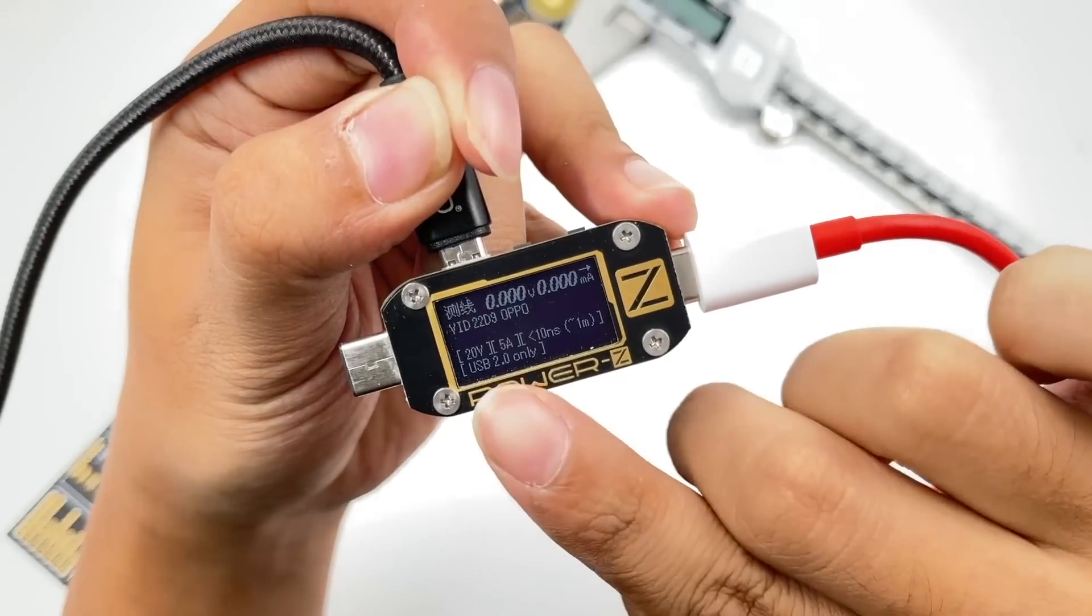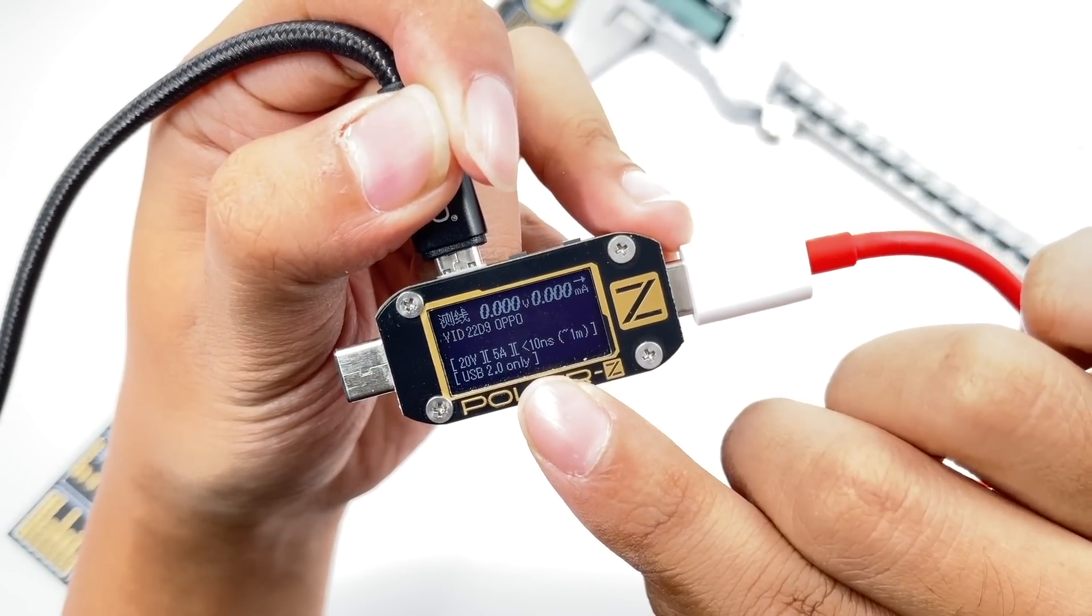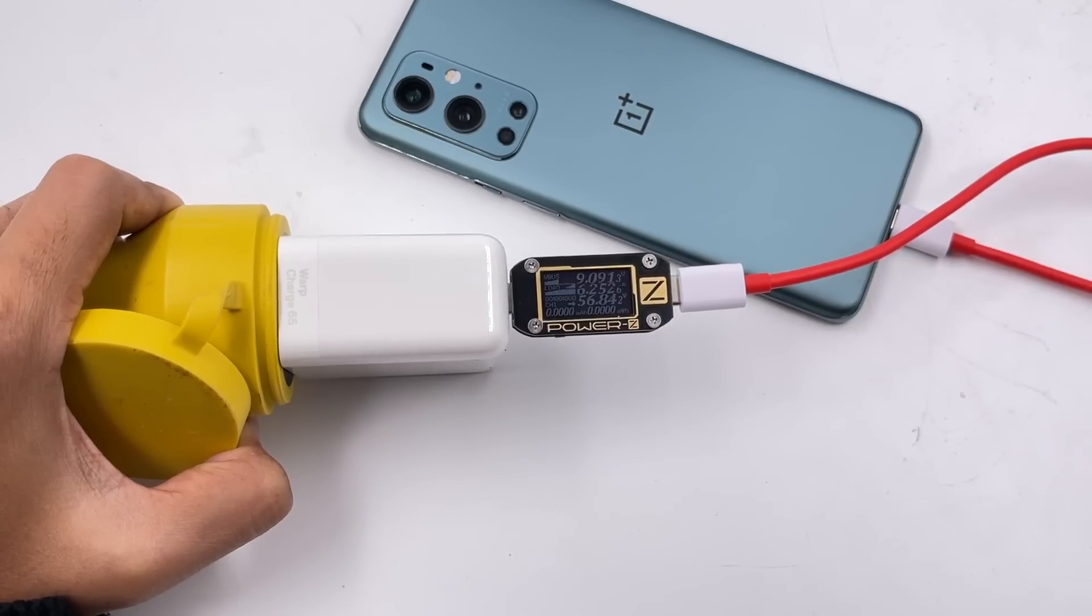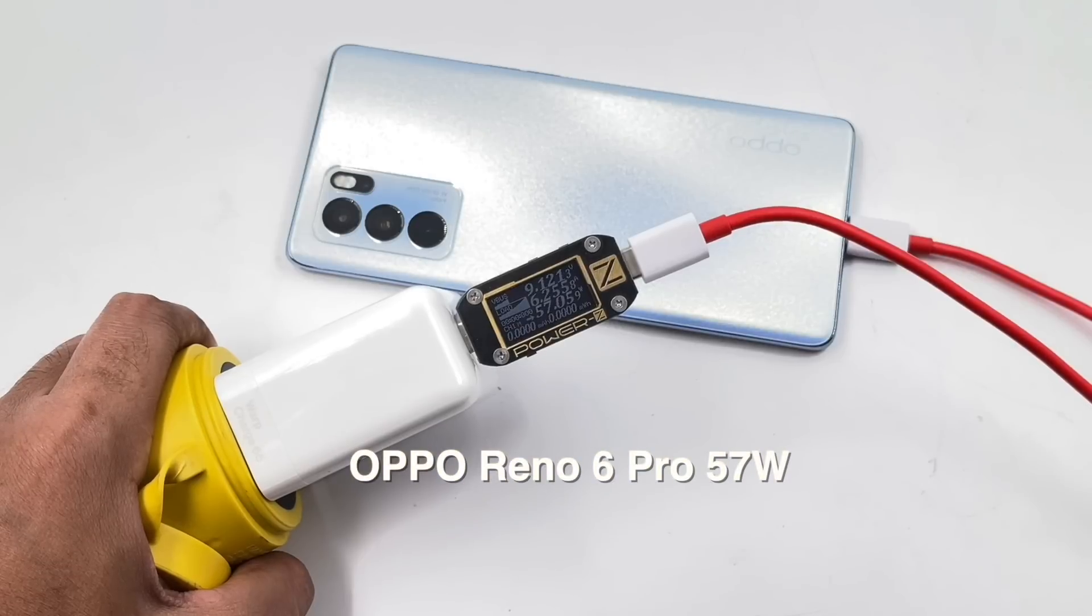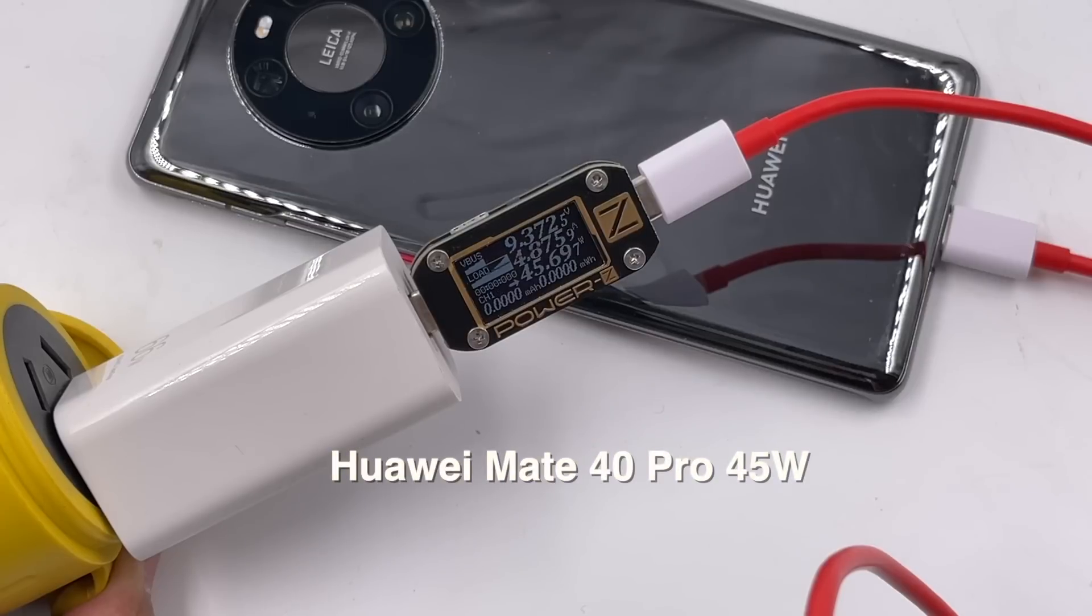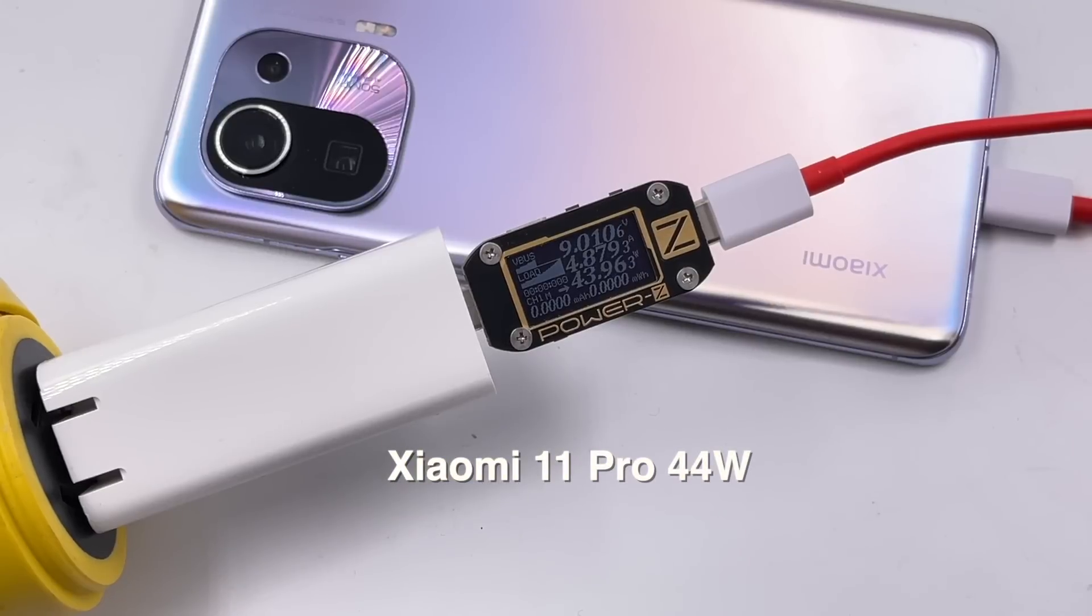Let's use ChargerLab PowerZ KT002 to test it. We can see it supports 5A and has an eMarker chip. Then, let's use it to charge some devices. This cable not only can support OnePlus, but some other brands. We will use it to work with the original charger of different devices to make sure the protocol can be matched.